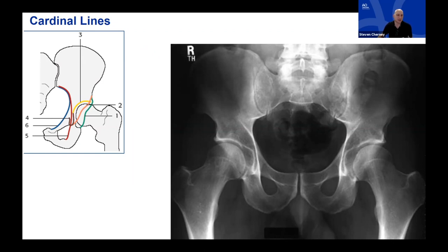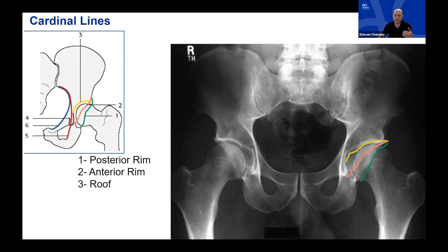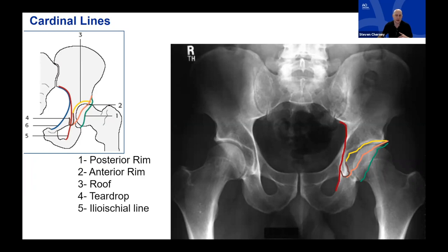Remember the cardinal lines as described by Judet and Letournel when assessing the hip socket: the posterior rim outlined in green, the anterior rim in peach, the weight-bearing dome or acetabular roof in yellow, the teardrop representing the quadrilateral surface and inner acetabulum, the ilioischial line in red, and the iliopectineal line in blue.